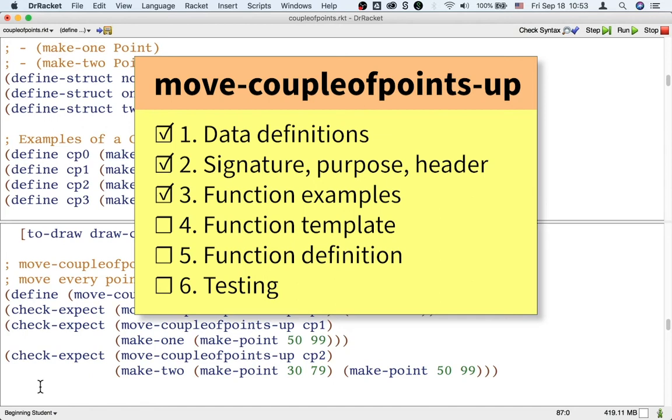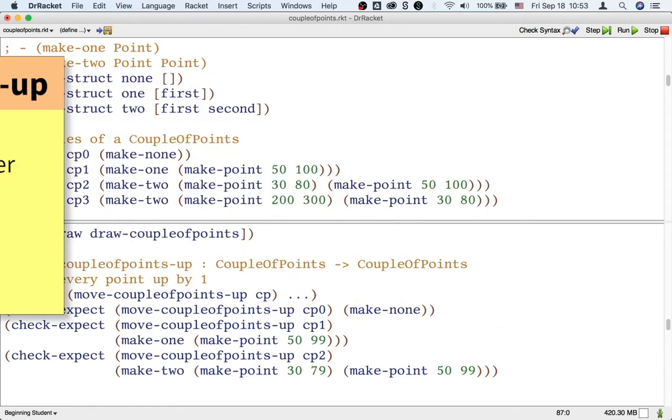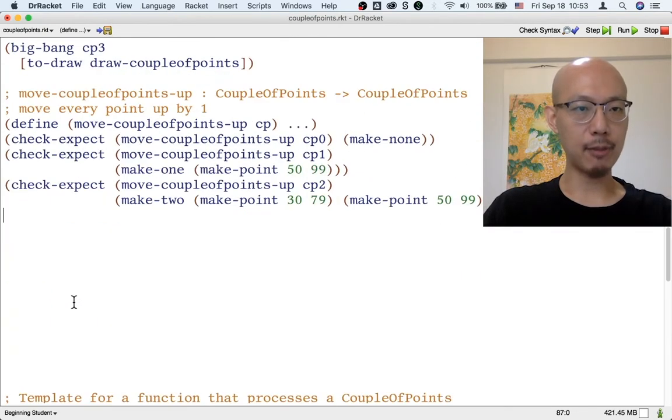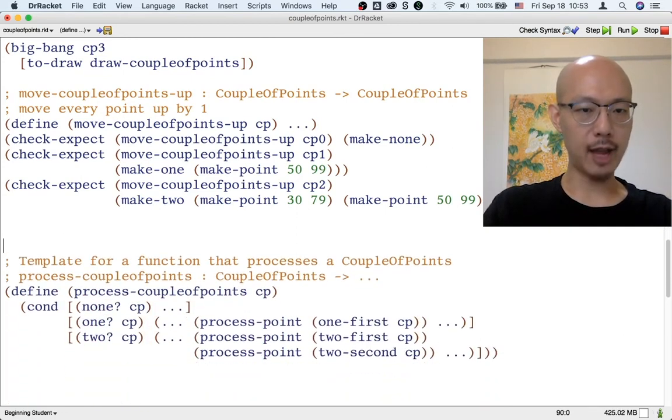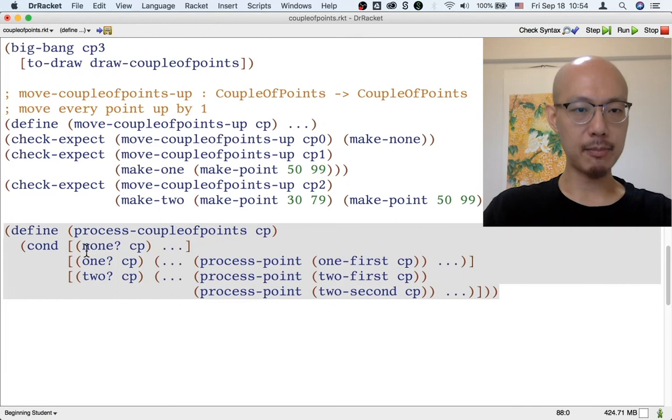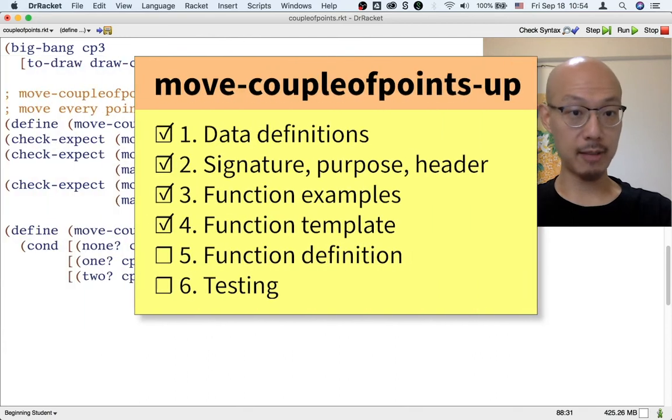Now we need to move on to step four of the design recipe, which is a template. Again, we already have the template. We use the same template from before to write drawCouplePoints, and now we're going to use the same template to write moveCouplePointsUp. So I'm going to rename process couple points to moveCouplePointsUp. We're done with the template. This is the template.